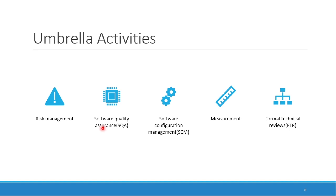Umbrella activities. Just as an umbrella keeps you safe from the outer environment — from rain or heat — these are the activities you perform throughout your software development lifecycle to protect your project. These activities ensure that you can handle any unforeseen risks. If there is a risk, we have a whole domain of risk management with different techniques and approaches.